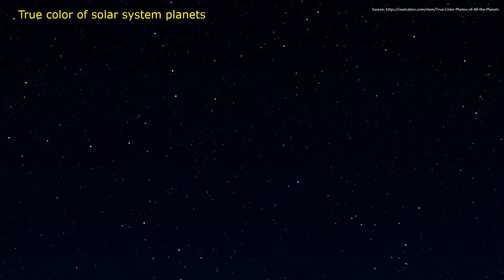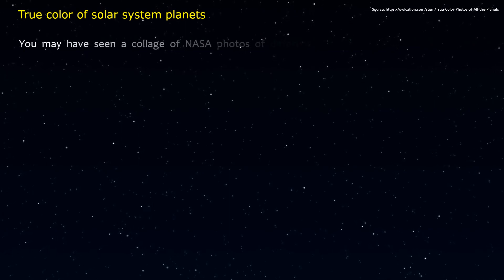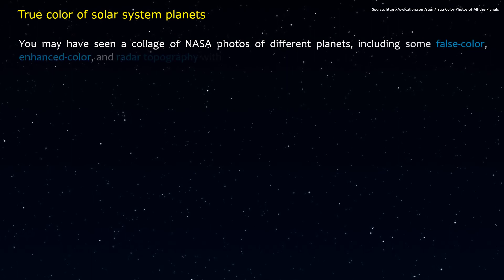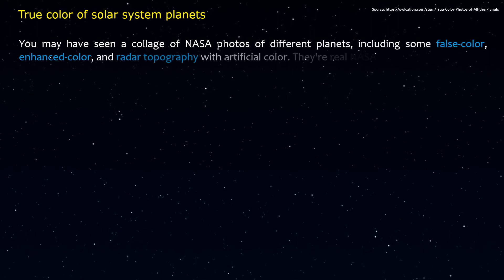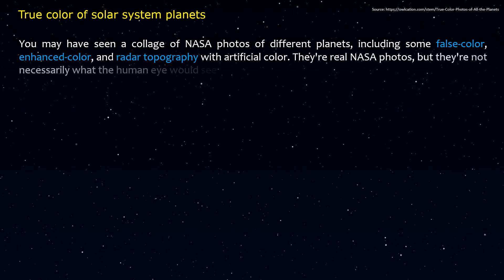True color of solar system planets. You may have seen a collage of NASA photos of different planets, including some false color, enhanced color, and radar topography with artificial color. They're real NASA photos, but they're not necessarily what the human eye would see.